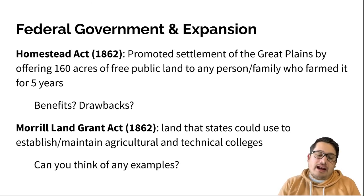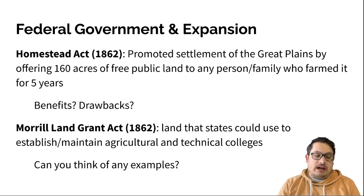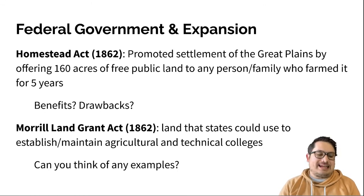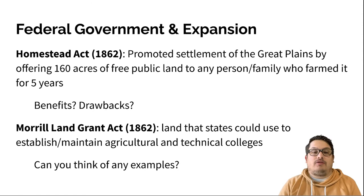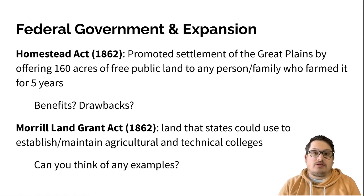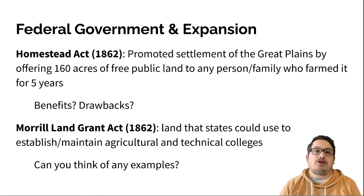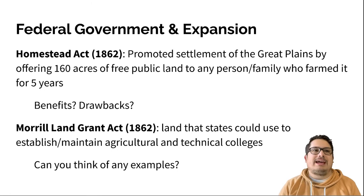You also have the Morrill Land Grant Act in 1862, and this is land given so that states can establish or maintain agricultural and technical schools. There are tons of examples — if you pick most state schools, they are Morrill Land Grant Act schools. We're talking NC State and other things in the Midwest with that sort of agricultural and technical school focus.